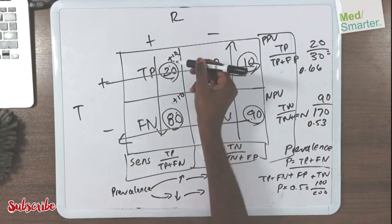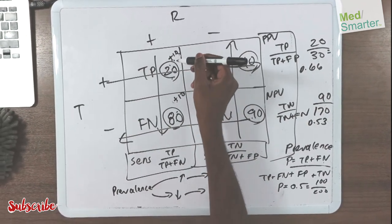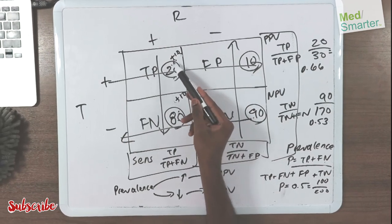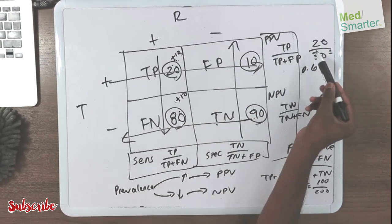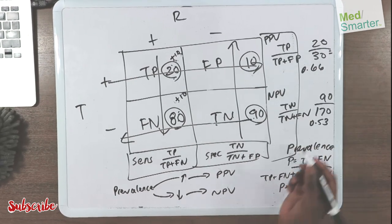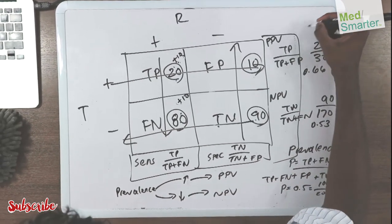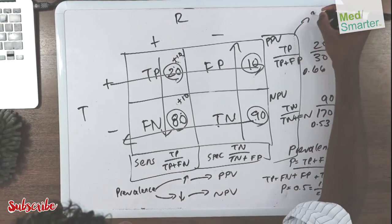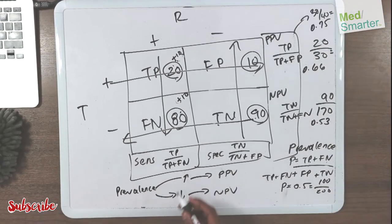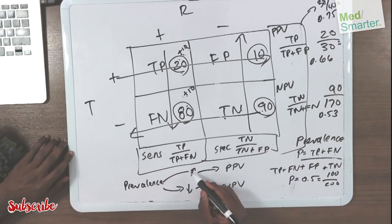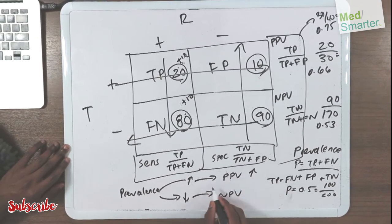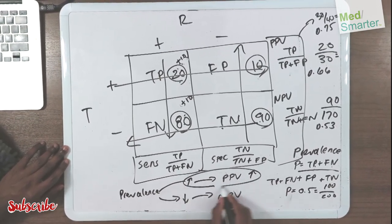But let's say you add 10 here. Now that you've added 10 — because you're increasing your prevalence — instead of 20 over 30, this now becomes 30 over 40, which gives you 0.75. So as your prevalence increases, your positive predictive value also increases.